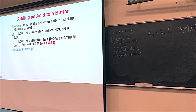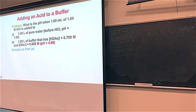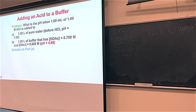Let's think about what happens when we add 1 milliliter of 1 molar HCl to pure water, and also to a buffer. Assume pure water started at pH 7.00. In the second case, we add the same 1 milliliter to a buffer. On Wednesday we calculated that the pH of this buffer system is 4.68.